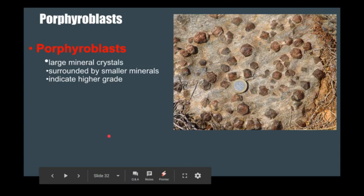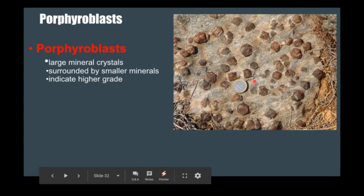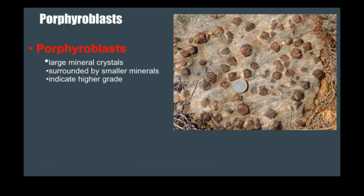Another common thing you could see in metamorphic rocks, especially schists, are porphyroblasts. Here are some garnets with a coin for scale. They'll often be surrounded by smaller micas. This can give you clues about the grade — garnets generally indicate a higher grade of metamorphic rock than just a schist by itself.